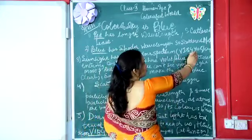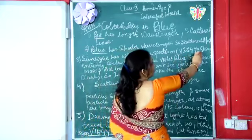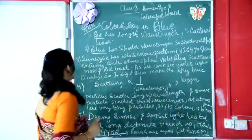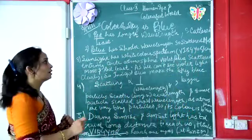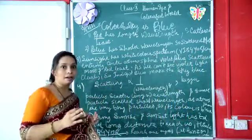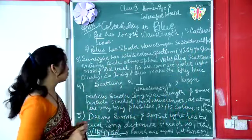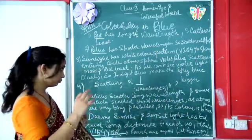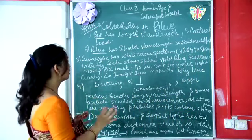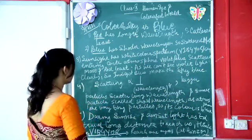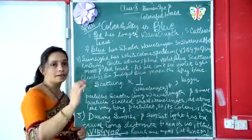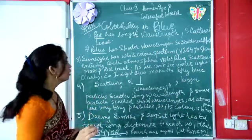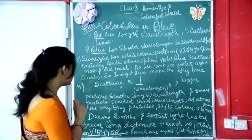Violet, indigo, blue, green, yellow, orange, red — so whenever sunlight enters the Earth's atmosphere, the blue color is scattered more and red is scattered least.